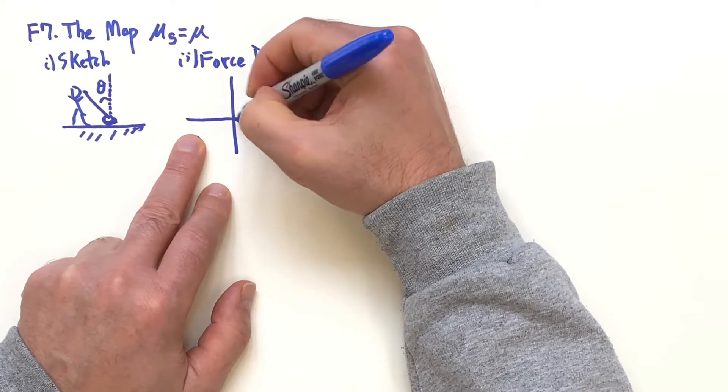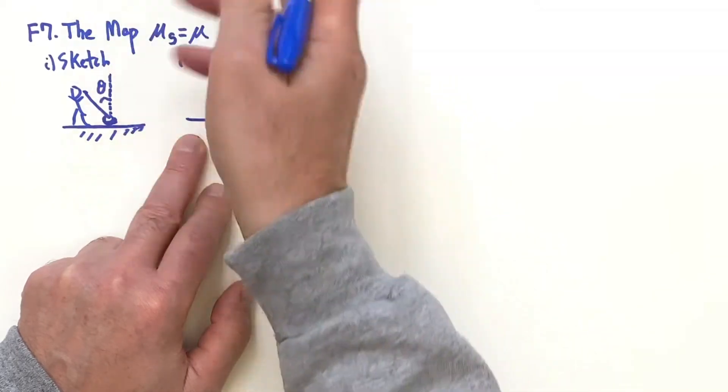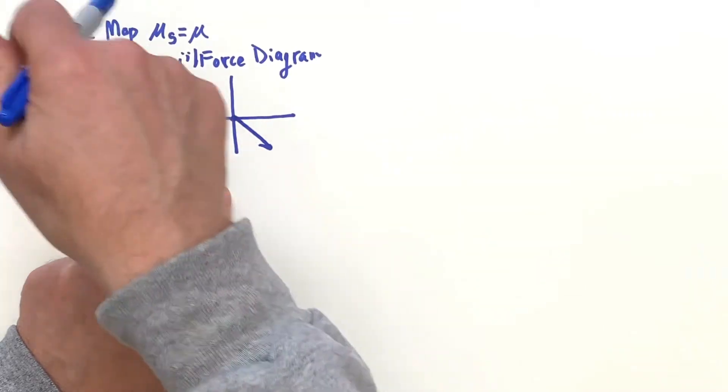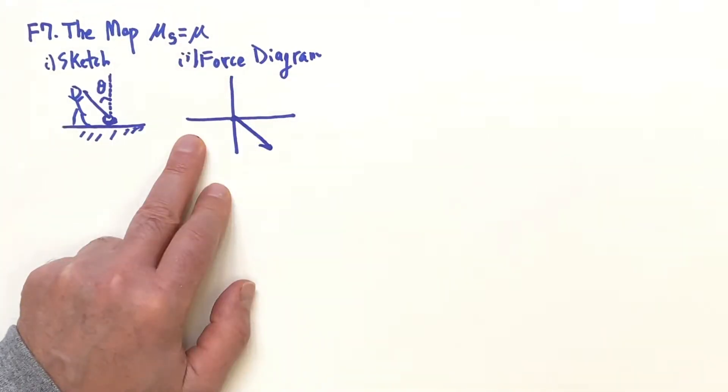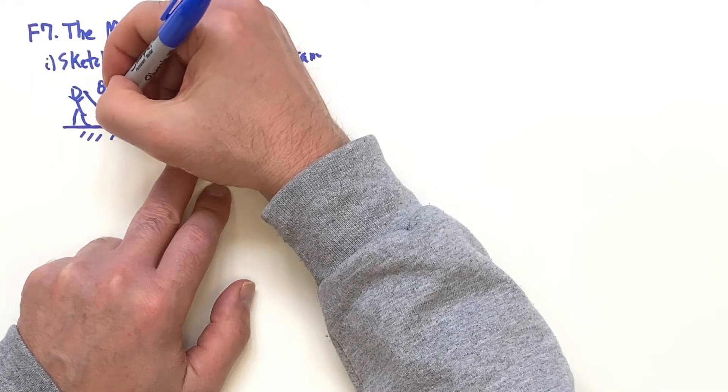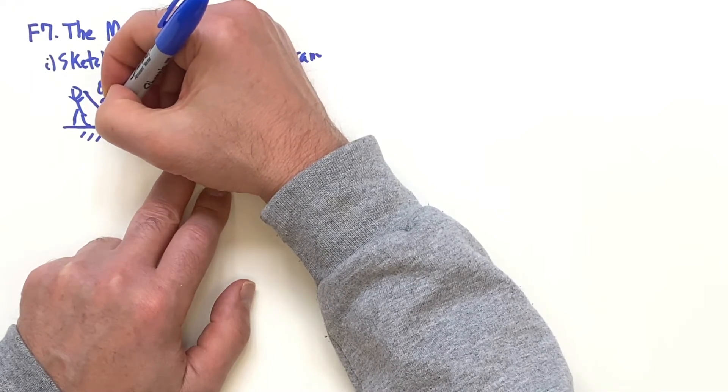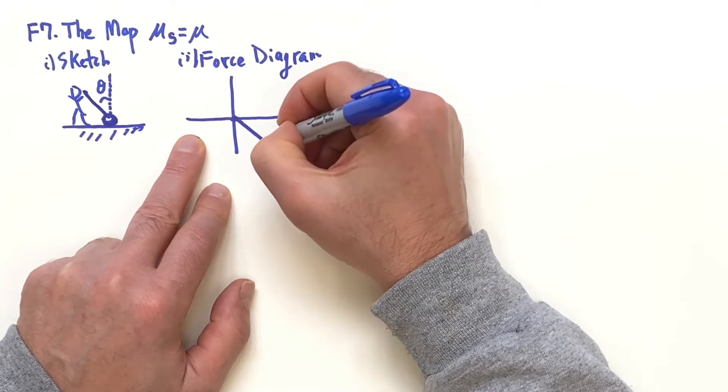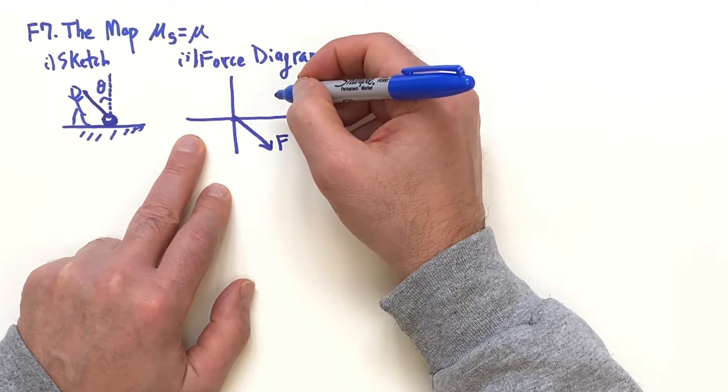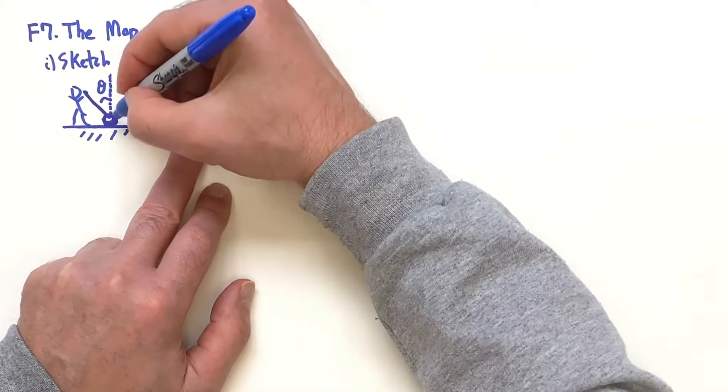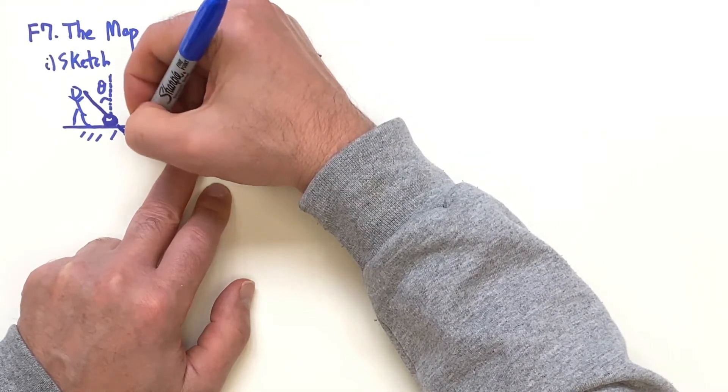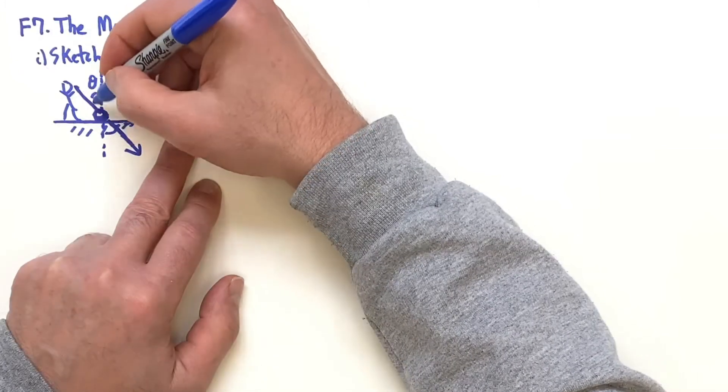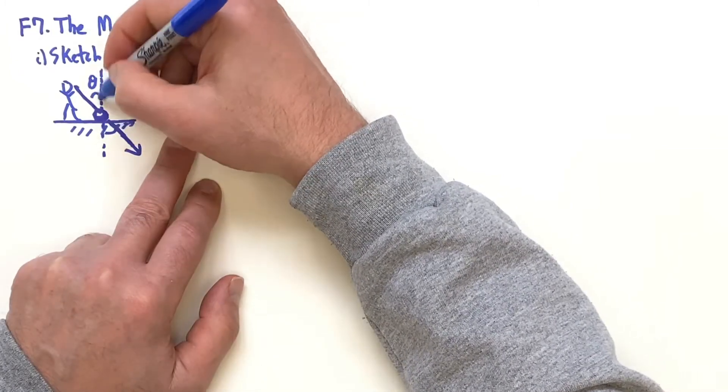For the force diagram, we have the mop head - we're going to neglect the handle, just focus on the mop. We have this force at an angle. These angles would be the same when you have that across like that, so that's angle θ.